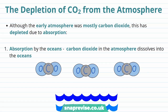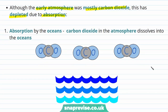So what happened to all the carbon dioxide from the early atmosphere? It has been depleted, and the carbon dioxide from the early atmosphere has been depleted due to absorption. For example, some carbon dioxide has been absorbed by the oceans — carbon dioxide that was previously in the atmosphere as a gas has dissolved into the water in the ocean, reducing the amount of free carbon dioxide in the atmosphere.